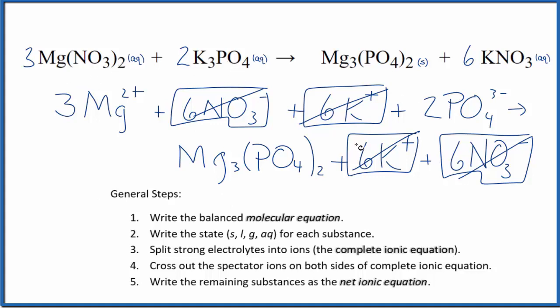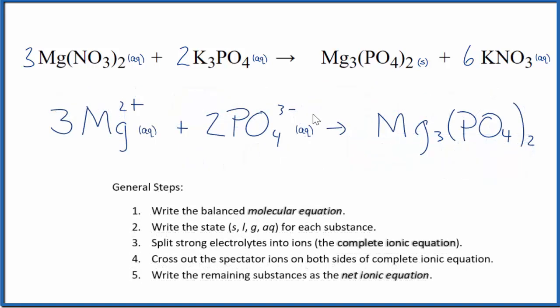I'll clean this up and write the states and we'll have our net ionic equation. So this is the balanced net ionic equation for Mg(NO3)2 plus K3PO4.